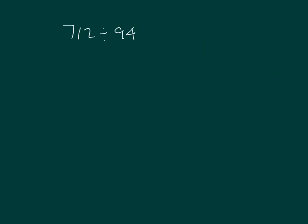Let's try one last problem: 712 divided by 94. Let's go ahead and estimate first. 94 is close to 90, and we can go 720 divided by 90, which is the same as 72 divided by 9, which equals 8.